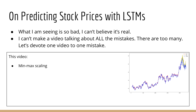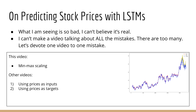There are other mistakes as well, which I will not talk about in this video, but here's a brief outline for what you can look forward to. Number one: using prices as inputs — this will be related to the current lecture, but there are subtle differences to consider. Number two: using prices as targets — if you are doing so-called stock predictions, predicting actual prices is useless. Number three: incorrect train/test splits — this will make your so-called stock price predictions look nearly perfect.